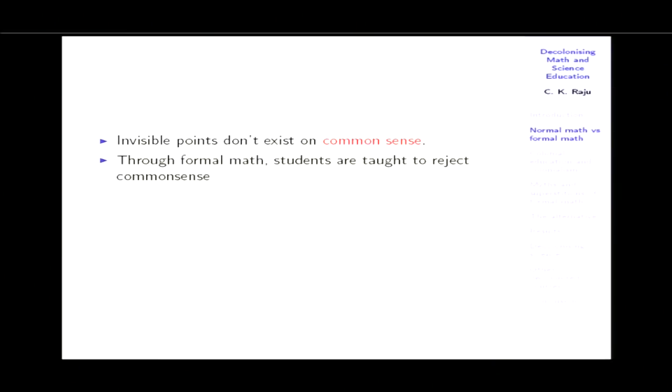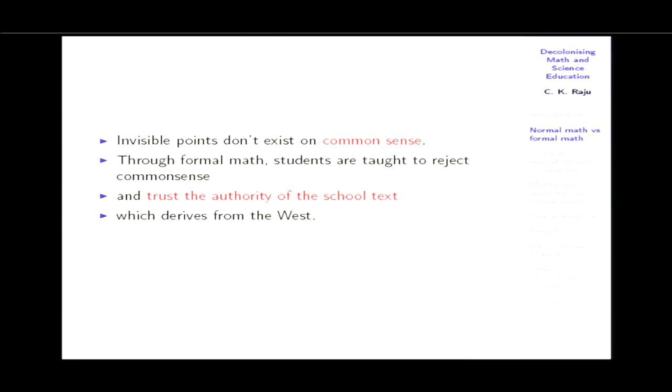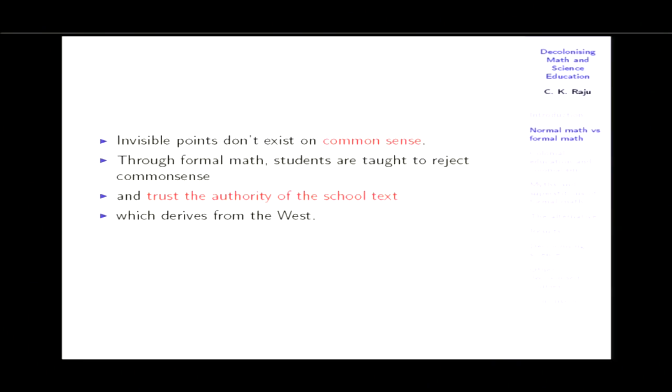Part of my thesis is that through formal math, students are taught to reject common sense and to accept the authority of the school text. This authority of the school text is not easy to change — it comes from the West. If Harvard and Cambridge changed the syllabus, you would accept it overnight; there would be no dispute. The dispute arises because the change is not coming from the West. Colonial higher education came as church education. All early Western universities — Cambridge, Oxford, Paris, Bologna — were set up by and controlled by the church until at least the 20th century.